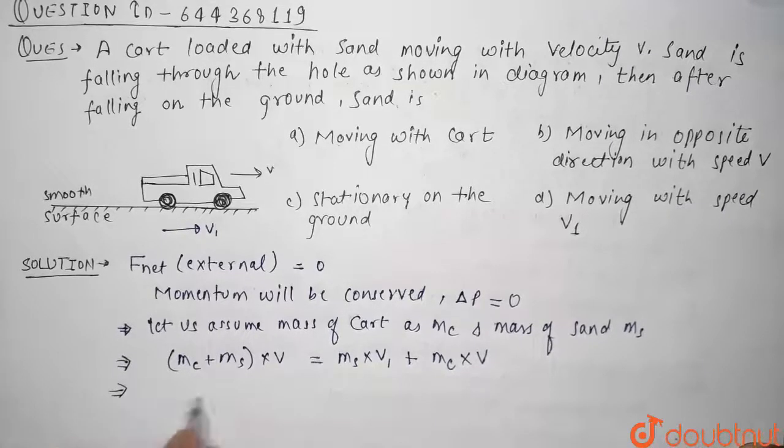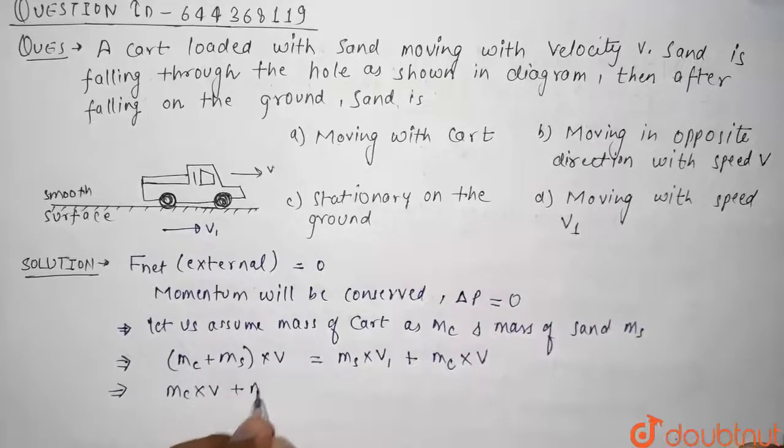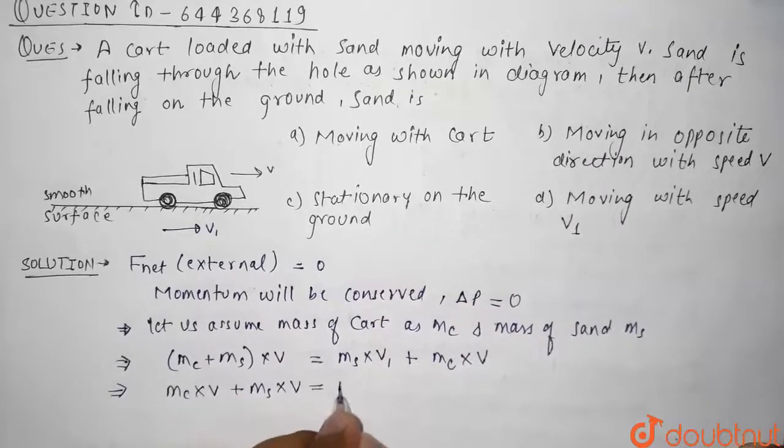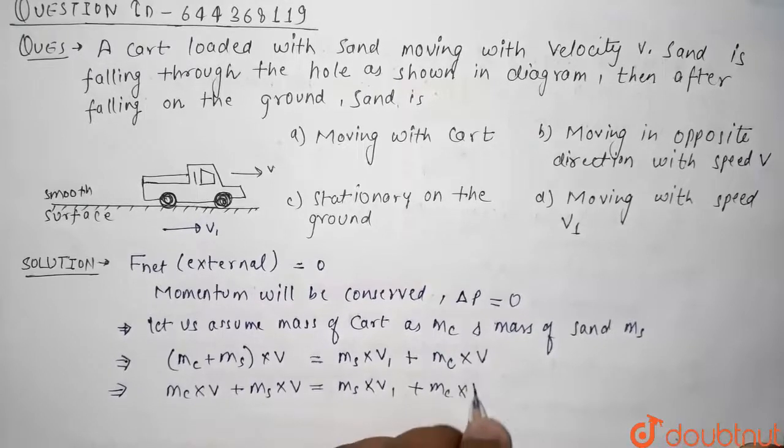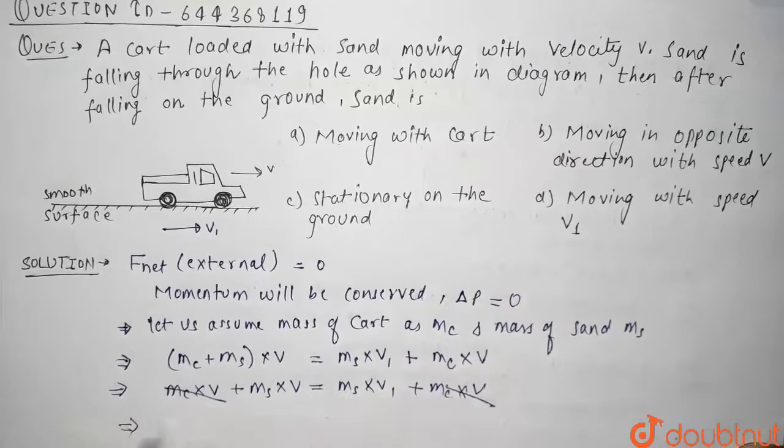Now after solving this comes out to be mc × v + ms × v = ms × v1 + mc × v. So this mc×v and mc×v will cancel, and ms will cancel, and this comes out to be v1 = v.